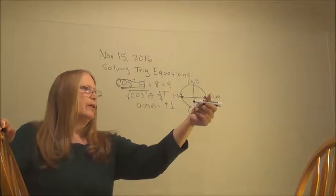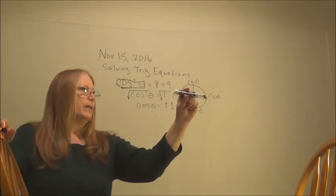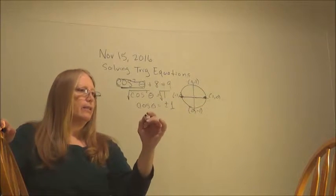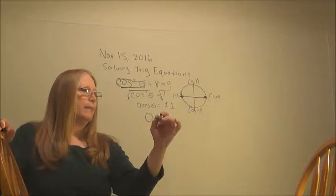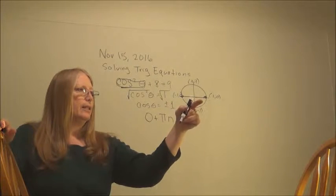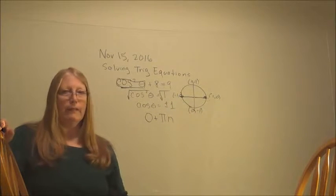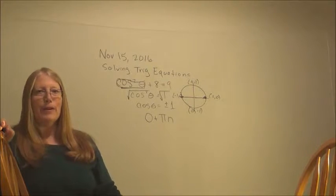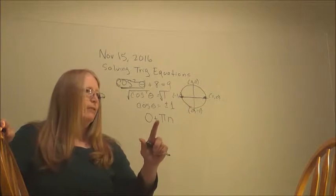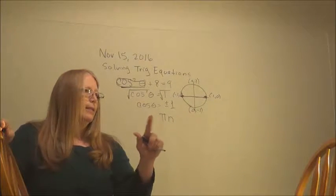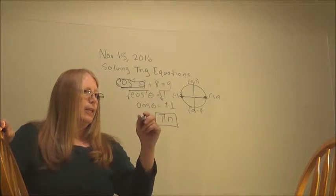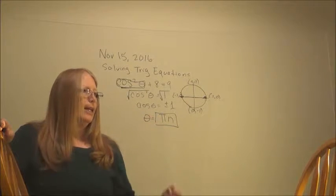And we can capture all of them by starting here and spinning pi each time. So I'm going to write 0 radians plus pi n. Do you see how that will capture this one? And then keep going around and get the infinity number of answers. Some of you aren't comfortable with that, so we don't have to write the 0.